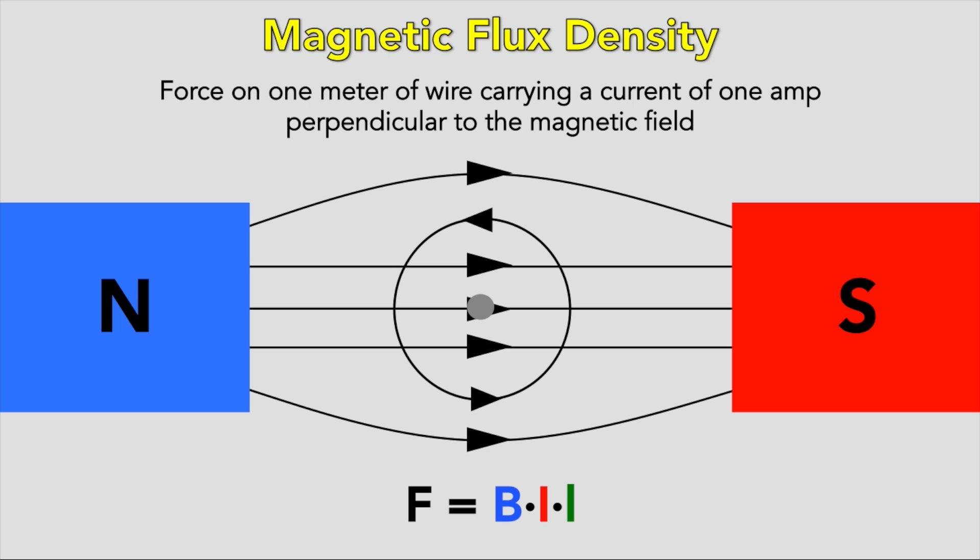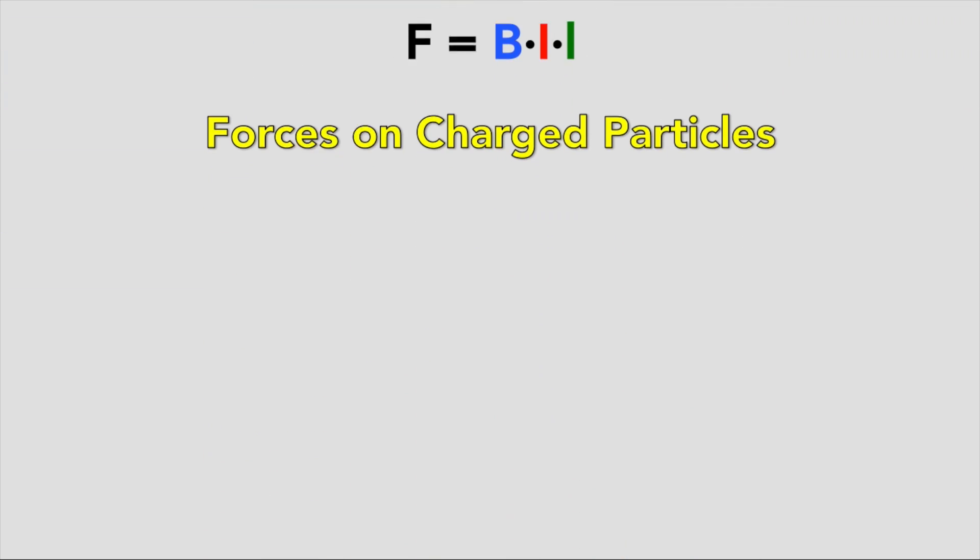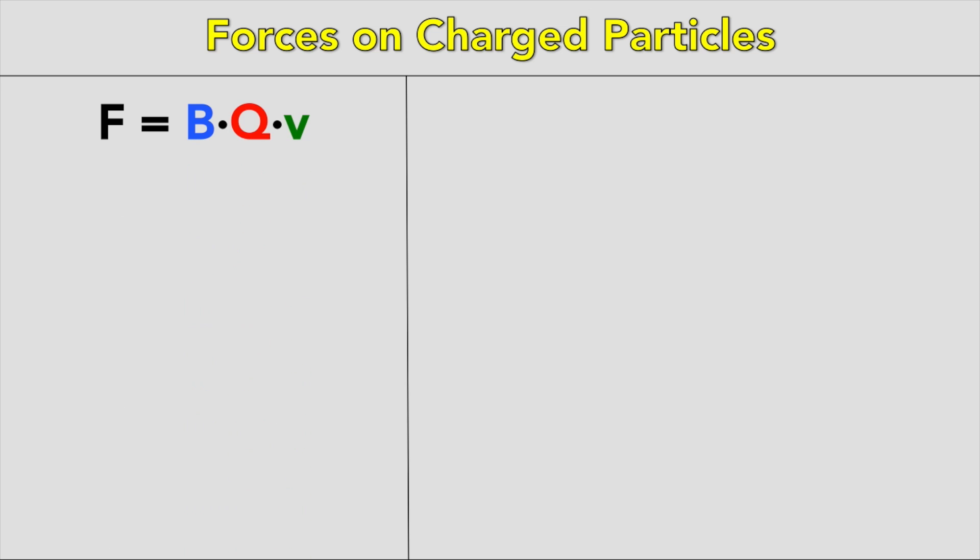If the wire and field are not at right angles, then a component of the force will still act, but when perpendicular the maximum occurs. Forces on charged particles: using Q = IT and the fact that a charged particle moves a distance L in time T, you can get F = BQV.